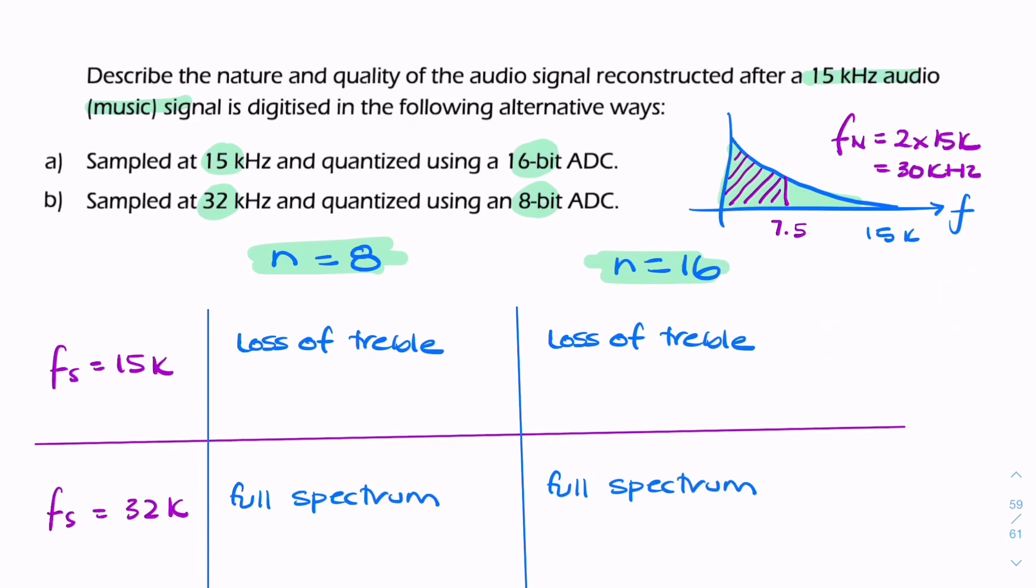We'll have a greater step size and greater quantization error. That quantization error translates into quantization noise. With n equals 8, we'll have more noise. Here, we'll have less noise. Even if we're sampling at 32k, it'll be noisier with an 8-bit quantizer, and less noisy with 16-bit. Less noisy is basically higher quality - clearer sound.